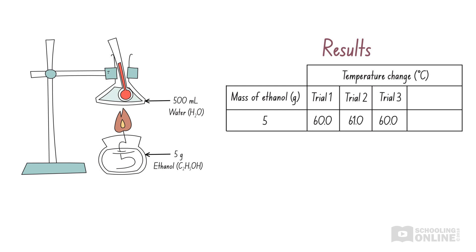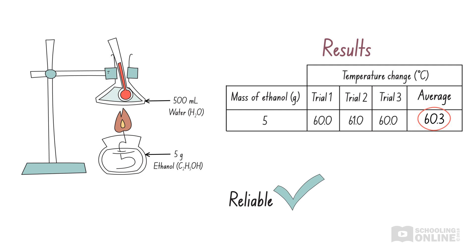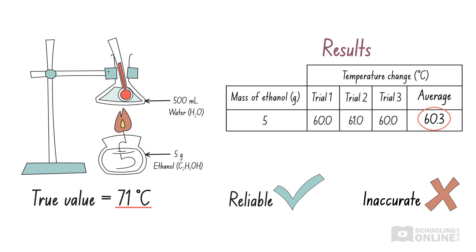So what does precision look like in science? Let's go back to the experiment where we burn 5 grams of ethanol. All the experimental results are close to each other, differing by only 1 degree Celsius. When we calculate the average temperature change, we find that all our results are close to this average. This means our results are precise and our method is reliable. However, the teacher informs us that the true value for the temperature change is 71 degrees Celsius, so our results are not accurate because they are lower than the true value. As you can see, we have reliable but inaccurate data.